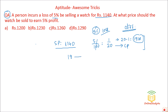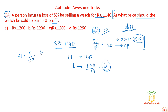Selling price is 19, and the actual selling price is Rs. 1140. So 1 = 1140 ÷ 19 = 60. They ask: at what price should the watch be sold to earn 5% profit? For 5% profit with a cost of 20, sell at 21. Since 1 = 60, 21 = 60 × 21 = Rs. 1260. Option C is the correct answer.